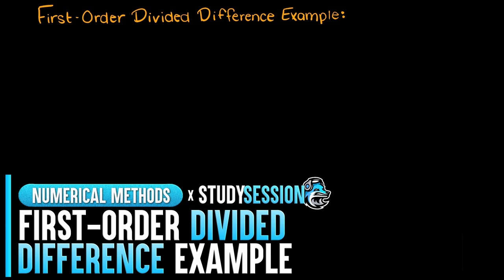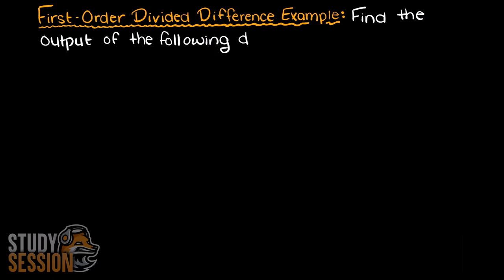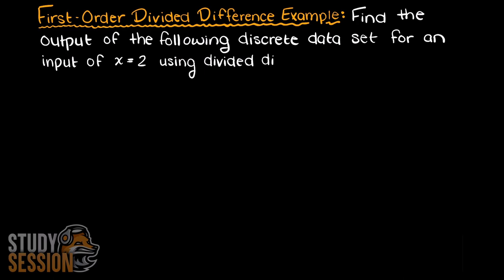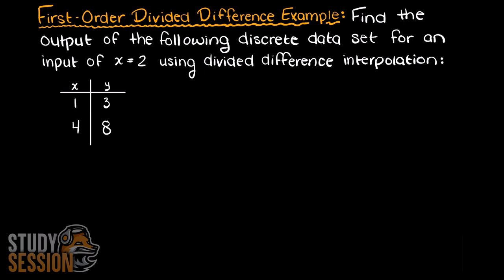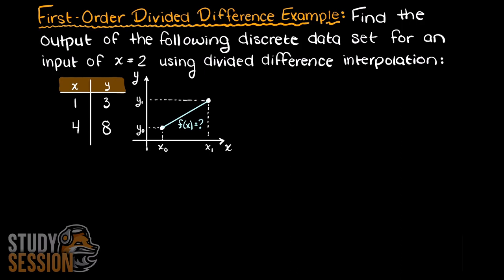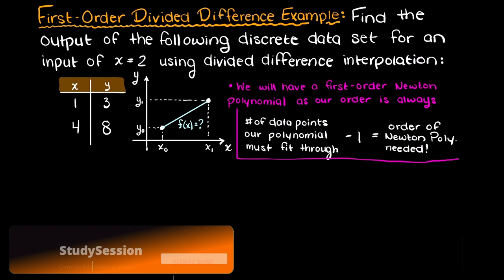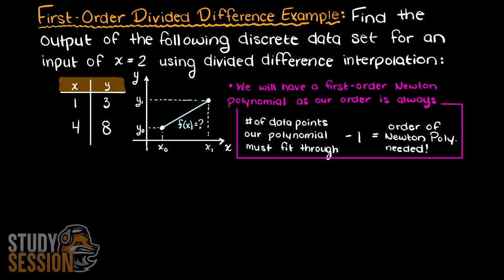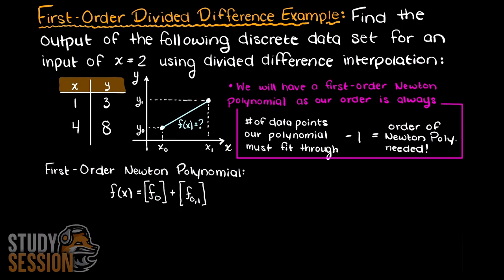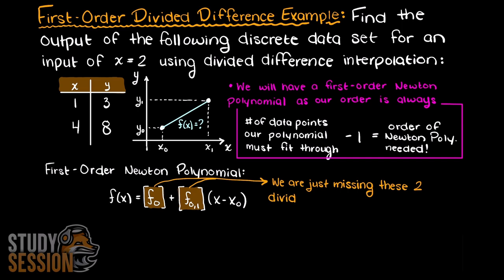In this example video we are going to be walking through a first order divided difference example. We are asked to find the output of the following discrete data set for an input of x equals 2. The first thing we need to do is determine what order Newton interpolating polynomial we need. Since interpolating polynomials must always pass through every data point, our Newton polynomial will always be order n minus 1. Therefore in this problem, we are being asked to solve for a first order divided difference. A first order Newton's polynomial has the following general equation, and we are only missing the coefficients called divided differences.